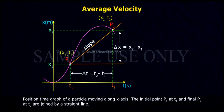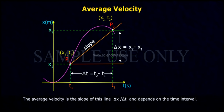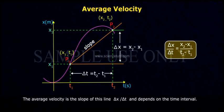Position-time graph of a particle moving along x-axis. The initial point p1 at t1 and final point p2 at t2 are joined by a straight line. The average velocity is the slope of this line, delta x by delta t, and depends on the time interval.